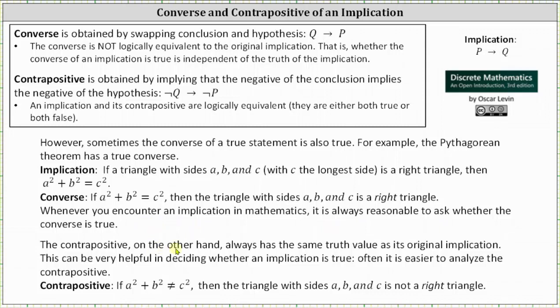The contrapositive on the other hand always has the same truth value as its original implication. This can be very helpful in deciding whether an implication is true. Often it is easier to analyze the contrapositive.